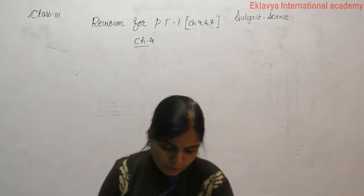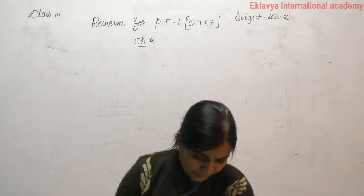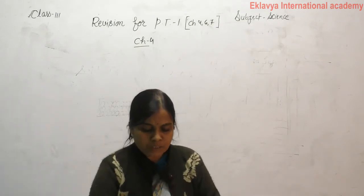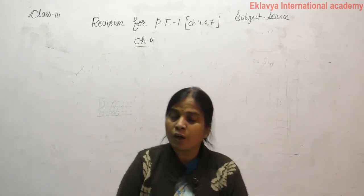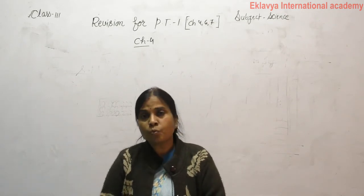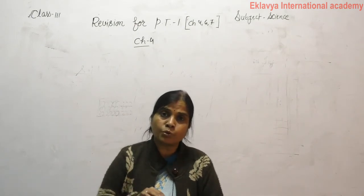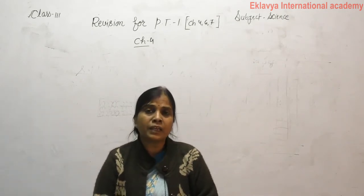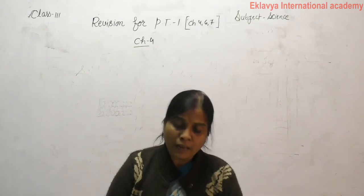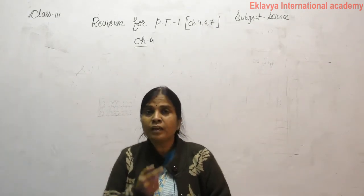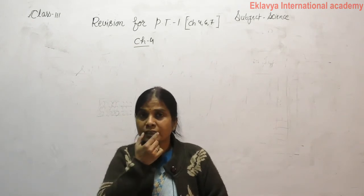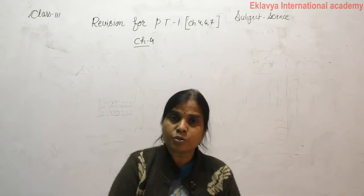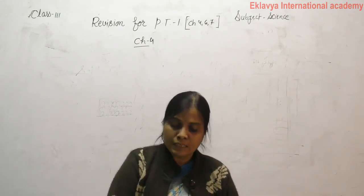Select the correct option. An organ is a body part which does a specific function. A group of organs is called an organ system. A place where two bones meet is called a joint. Muscles help our body for movement. Digestion starts in the mouth. The small intestine is part of the digestive system.